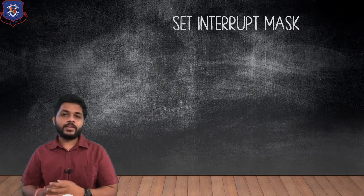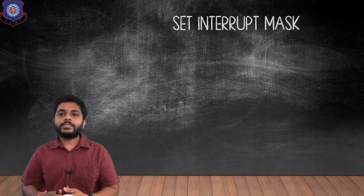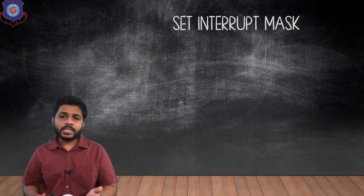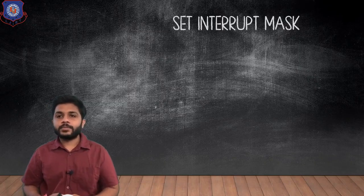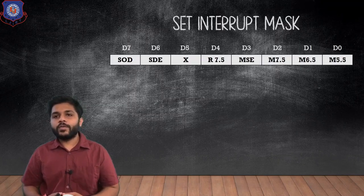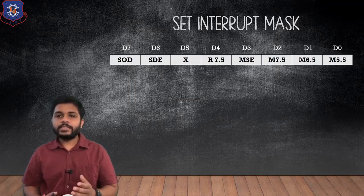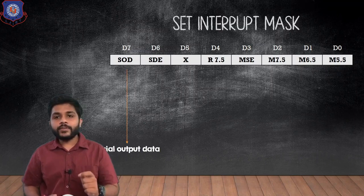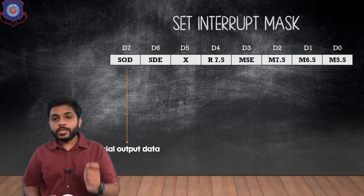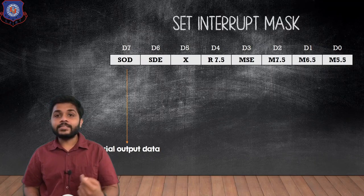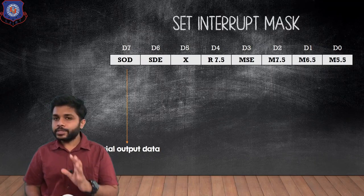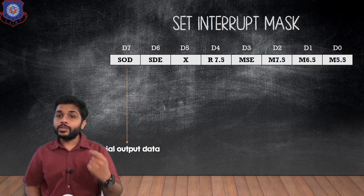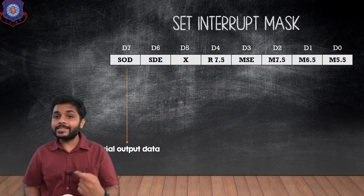Now let's look at the next instruction: Set Interrupt Mask (SIM). Using SIM we can mask and unmask interrupts. The D7 bit is serial output data — using this bit we can serially send data. While RIM allows us to receive serial data, SIM allows us to serially send data.